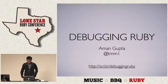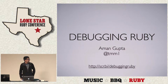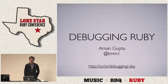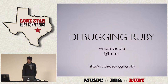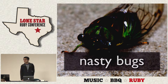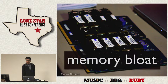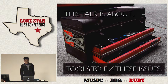This talk is about debugging Ruby. The slides are up on Scribd at bit.ly/debuggingruby. My name is Aman, I go by TMM1 on GitHub and Twitter. In writing Ruby code, you've probably run into nasty bugs, slow code — Ruby's known to be sort of slow — and memory bloat. This talk is essentially about tools you can use to fix these issues.